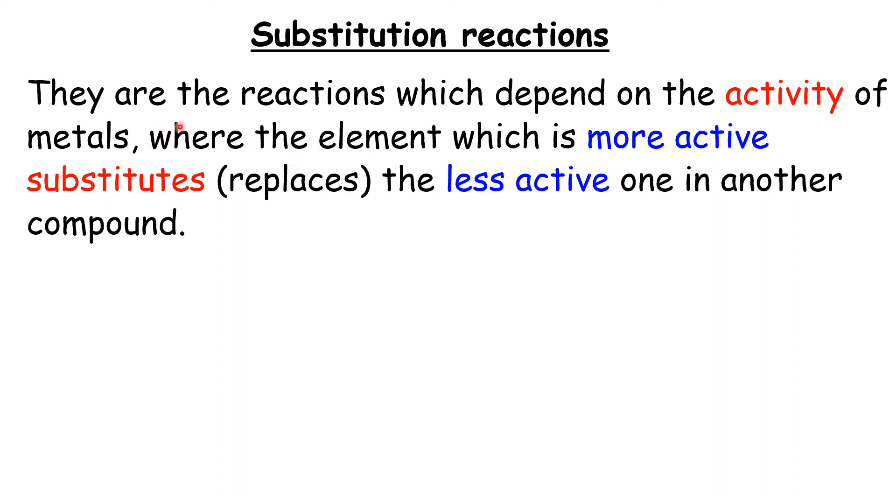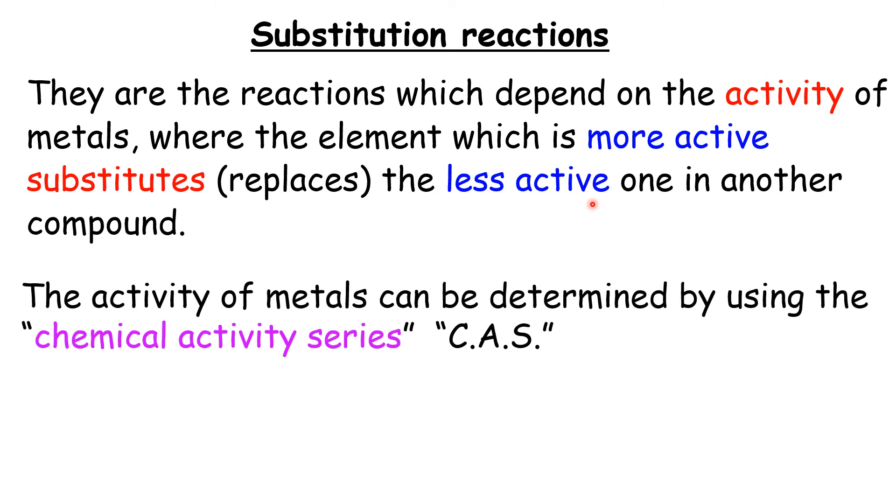They are the reactions which depend on the activity of metals. The element which is more active substitutes or replaces the less active one in other compounds. The activity of metals can be determined by using the chemical activity series, abbreviated as CAS.